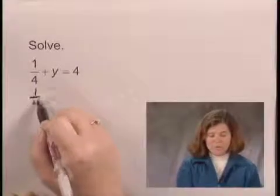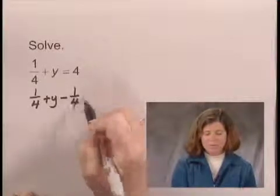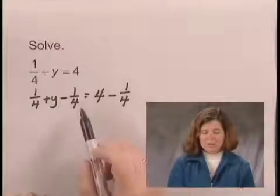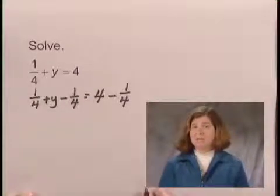So we will write 1 fourth plus y minus 1 fourth equals 4 minus 1 fourth. This equation is equivalent to the one before it because we subtracted the same number on both sides of the equation.